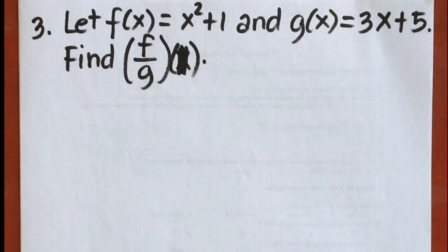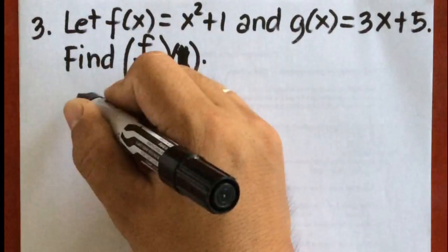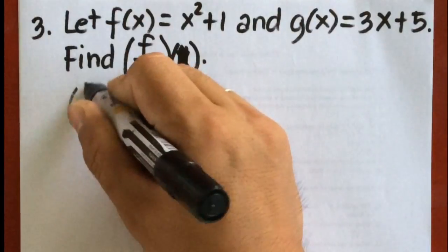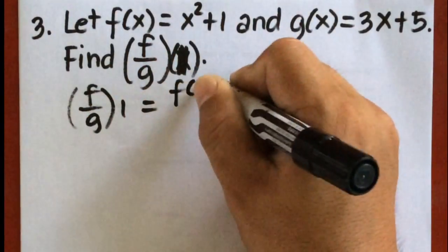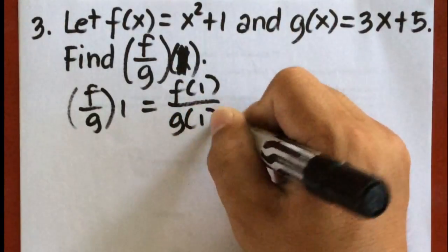Example number three, find f over g of 1. So f over g of 1 will be equal to f of 1 over g of 1.